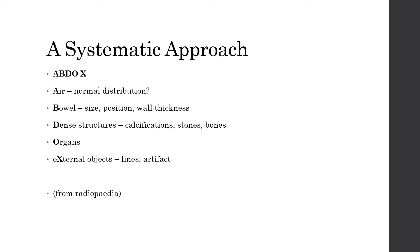However, abdominal x-rays are still done relatively frequently, so it's important to have an approach when presented with one. This is taken from Radiopaedia and uses an ABDO X mnemonic. A is for air — is this normally distributed or is there an aberrant distribution of gas? B is for bowel — is it of normal size, is its position normal, does it look malrotated, and is the wall a normal thickness? D is for dense structures — looking at stones and bones as well as calcified organs. O is for organs — whilst an abdo film isn't very good for soft tissue pathology, it can be useful to know where the organs lie. X is for external objects such as lines, drains, and artifacts that can complicate interpretation.